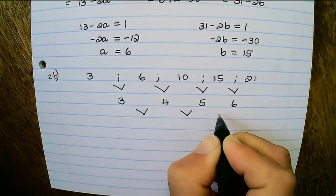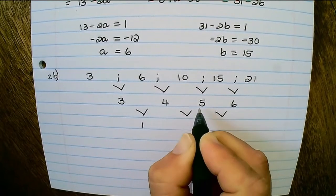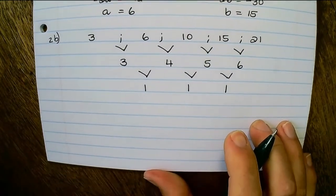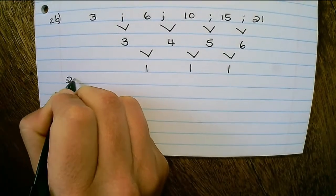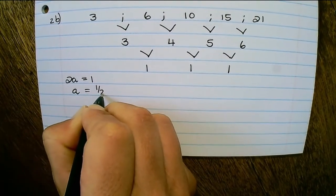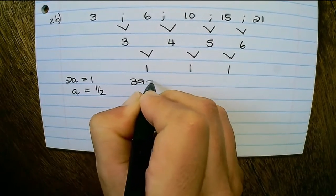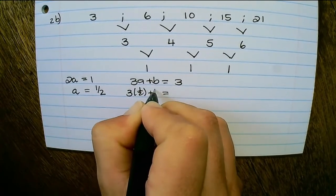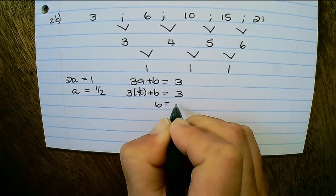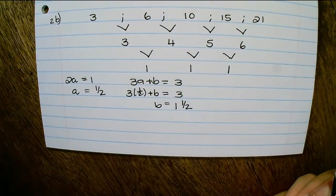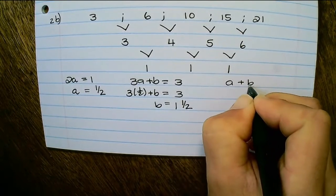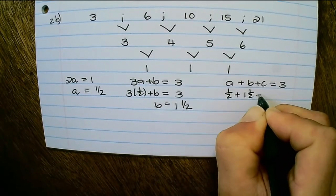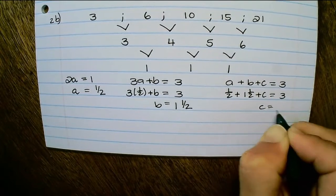The second differences are: 4 minus 3 equals 1, 5 minus 4 equals 1, and 6 minus 5 equals 1. Therefore 2a equals 1, so a equals one half. Then 3a plus b equals 3 gives 3 times one half plus b equals 3, so b equals one and a half. Then a plus b plus c equals 3 gives one half plus one and a half plus c equals 3, therefore c equals 1.